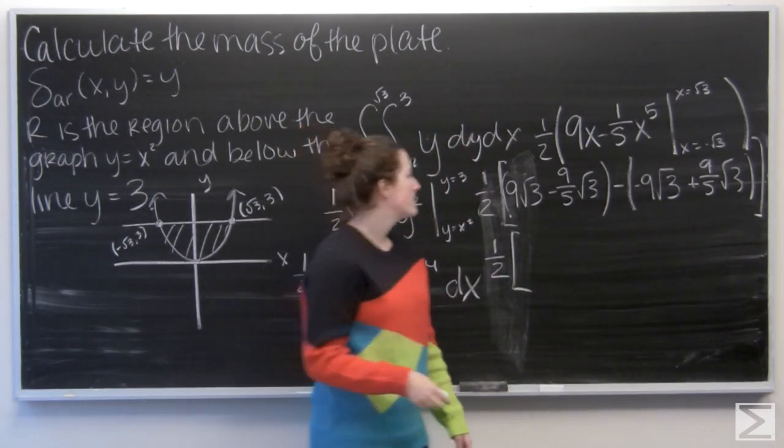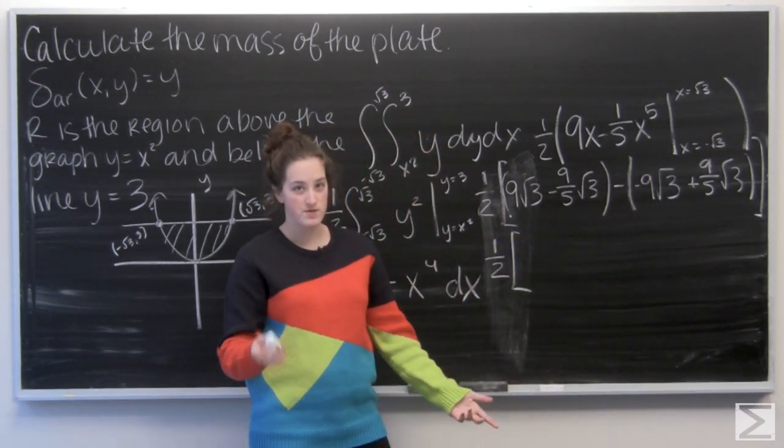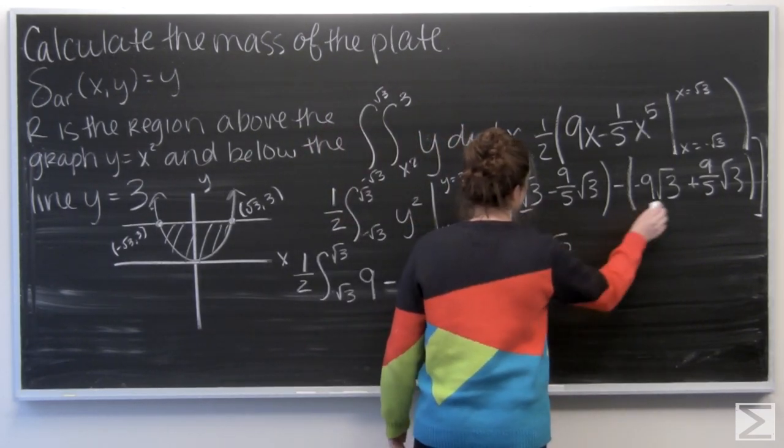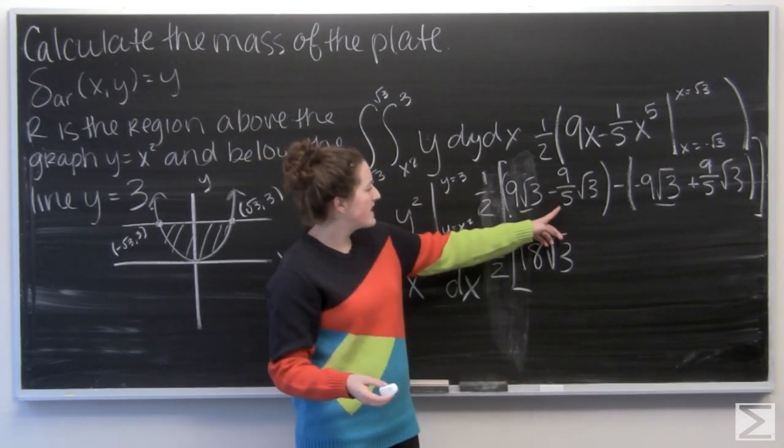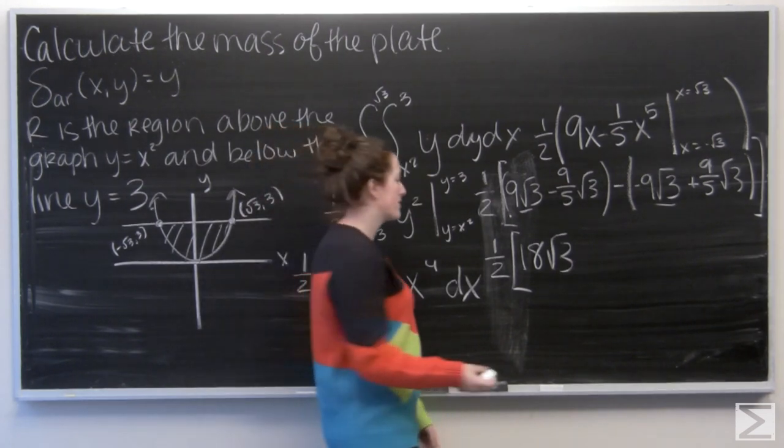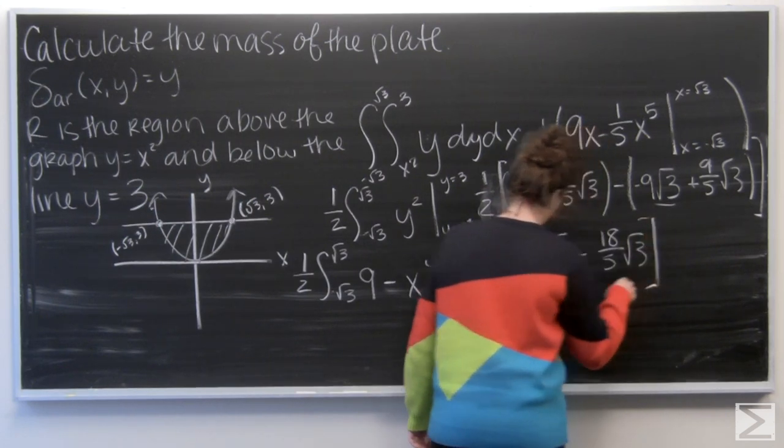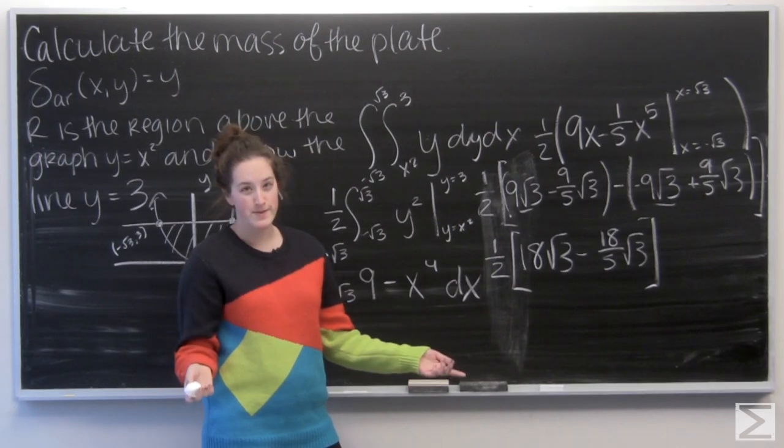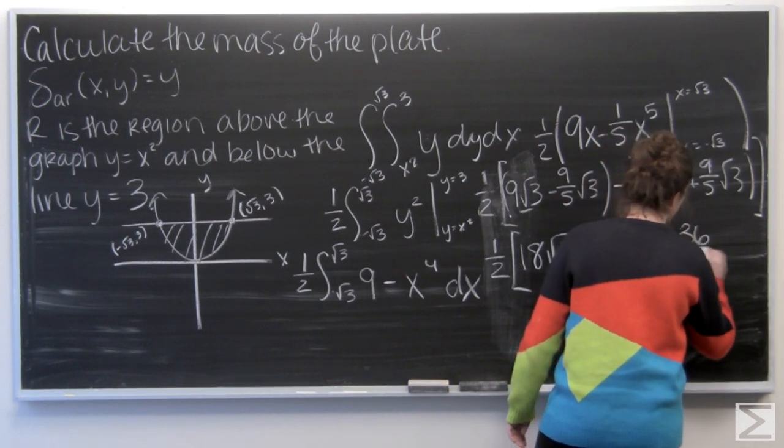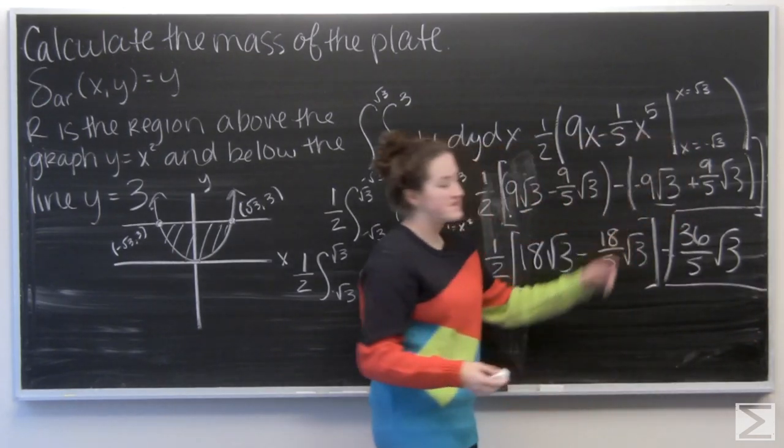So let's combine some things. I have 9 square roots of 3 minus a negative 9 square root of 3. So 18 root 3. Those two are taken care of. And now I have negative 9 fifths square root of 3 minus 9 fifths square root of 3. So negative 18 fifths square root of 3. So you can let your calculator do the hard work on this one. But I'm going to end up with 36 fifths square roots of 3.